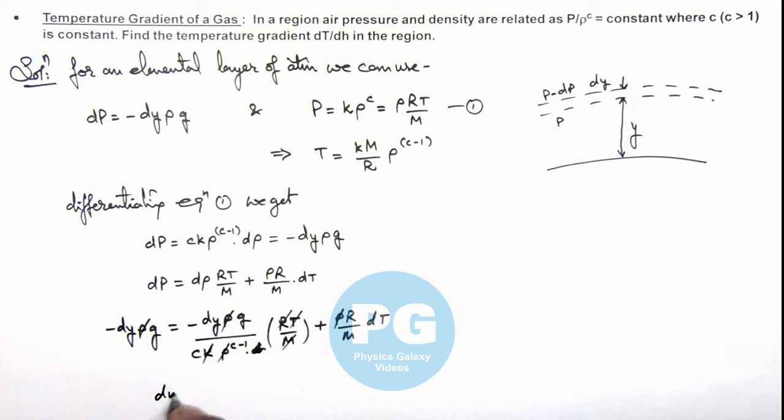Now if we take this d y on the other side here you can see we'll get the value of d y multiplied by 1 by c minus 1 is equal to r d t over em g. This is the relation we are getting.